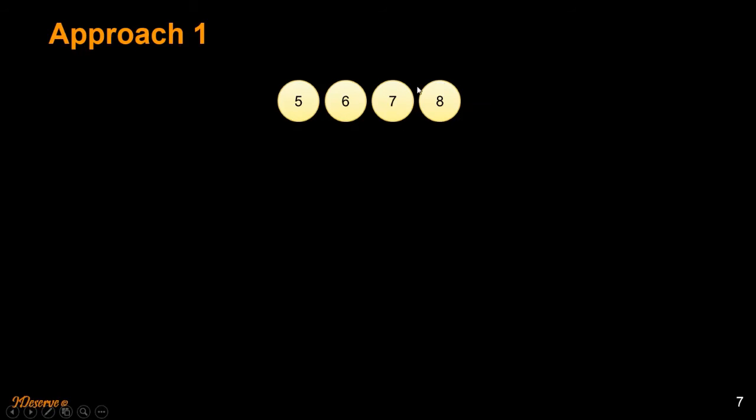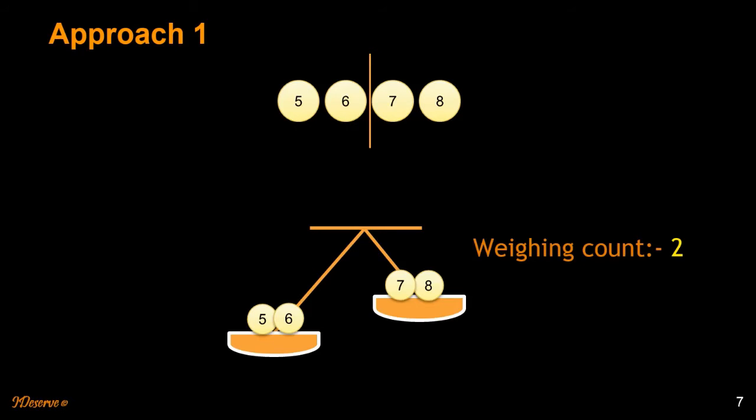Now we will follow the similar approach. We will divide this group up in two parts and then weigh them. So we are doing the second weighing, using the balance for the second time. Assume that five and six is heavier than seven and eight. So the heavier ball is part of these two. Still we don't know which one is heavier.